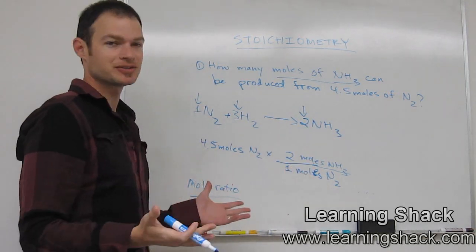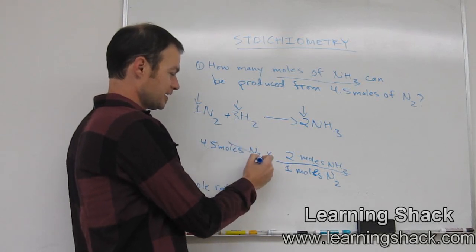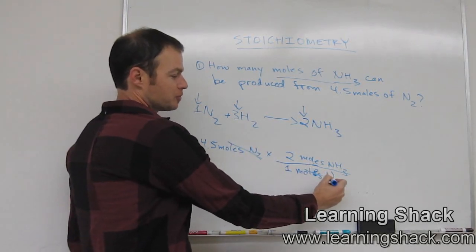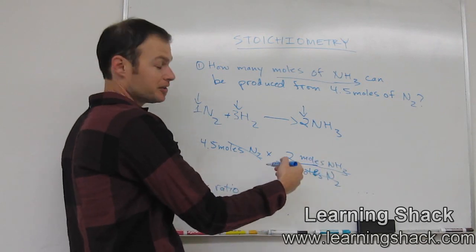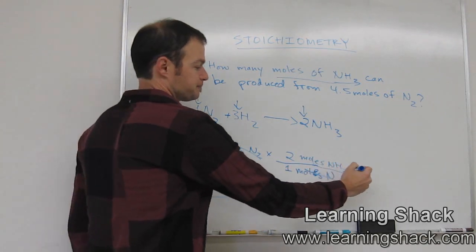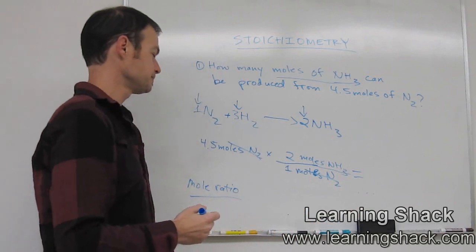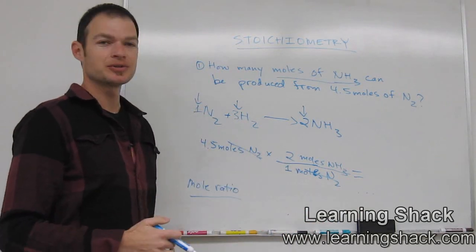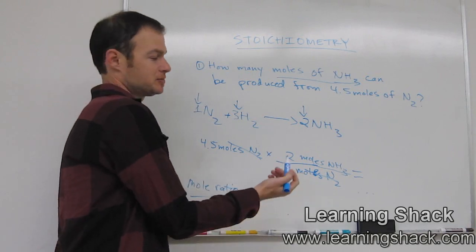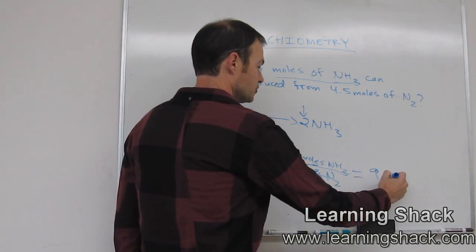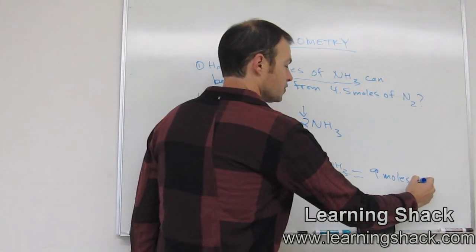Now what happens, as you can see if you did this correctly, is that the moles are going to cancel. So we have moles of N2 canceling with moles of N2. And then what we're left with is whatever is on the top of this fraction right here. Put a little equal sign, and we solve. Basic arithmetic: 4.5 times 2 divided by 1. So that's 9 moles of NH3.